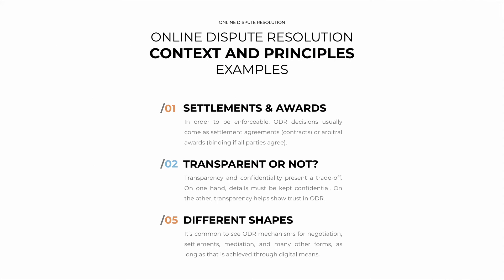What are some examples of the context and principles of ODR? The first are settlements and awards. How are ODR decisions enforceable? In order to be enforceable, these decisions usually come as settlement agreements — contracts that must be enforced by a court later — or arbitral awards, which are binding but only if all parties agree to them. Then comes transparency versus confidentiality: there is a trade-off here. Details must be kept confidential, but transparency helps show results and build trust in the ODR platform. Finally, there are different shapes for ODR: specific mechanisms for negotiation, settlements, mediation, and many other forms, as long as dispute resolution is achieved through digital means.